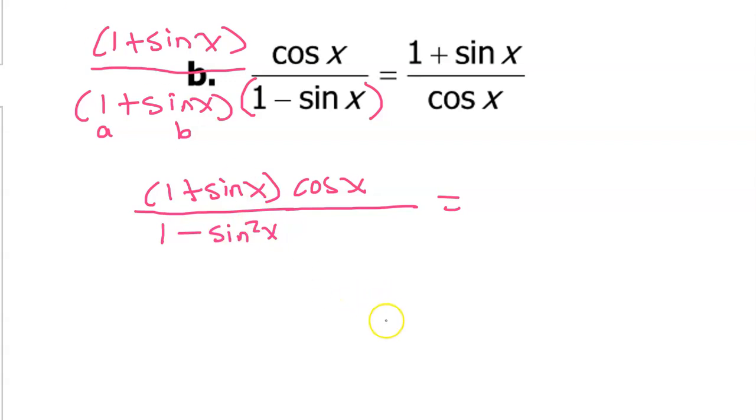But also one minus sine squared is looking real familiar. Think about the most famous Pythagorean identity. Sine squared plus cosine squared is equal to one. If I were to subtract sine squared from both sides I would get cosine squared is equal to one minus sine squared, which I see right here. One minus sine squared is equal to cosine squared. So we can use the Pythagorean identity to replace one minus sine squared with cosine squared. So I will now have one plus sine x times cosine x over cosine squared.